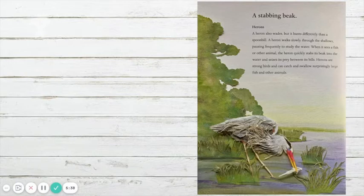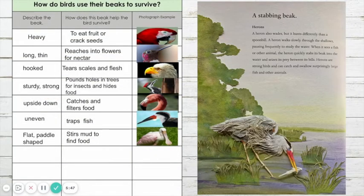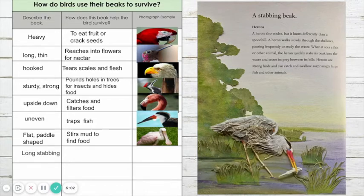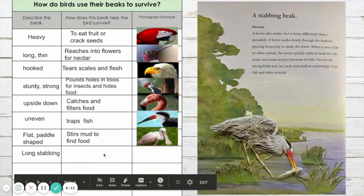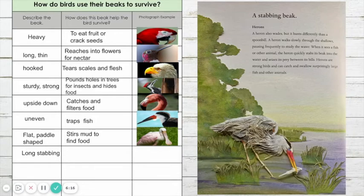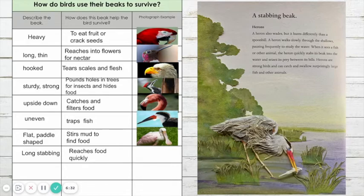The heron stabs its beak into the water to catch its prey. Let's add heron onto our beaks chart. First, describe that beak — using the heading, what kind of beak does the heron have? That's right, our heading says a stabbing beak, so on our chart we'll add long stabbing. How does that long stabbing beak help the heron to survive? It reaches food quickly — it darts its beak into the water to catch its prey. Let's add a picture of a heron's beak to help us remember.